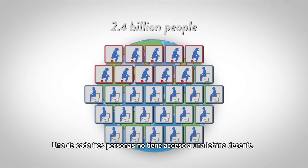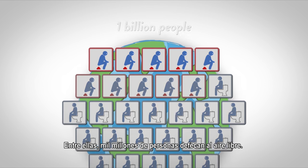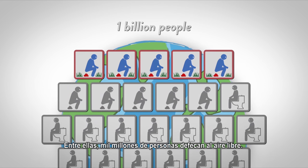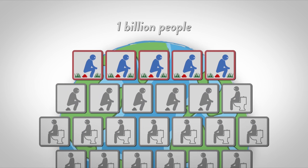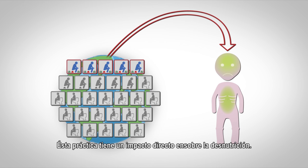One out of three people does not have access to a decent toilet. One billion amongst them practise open defecation. This has a direct impact on undernutrition.